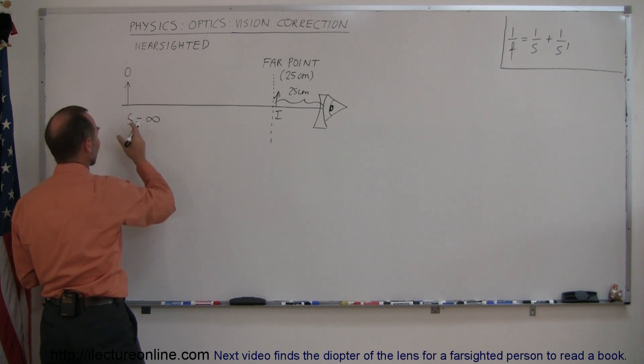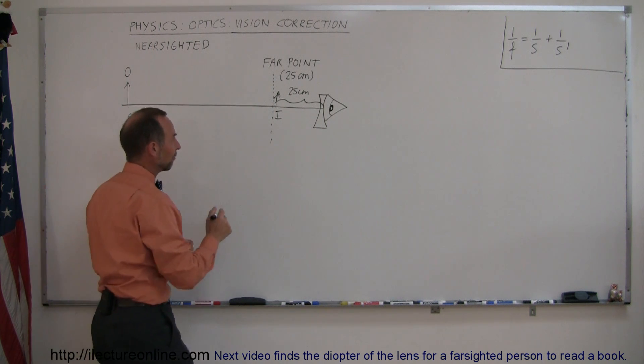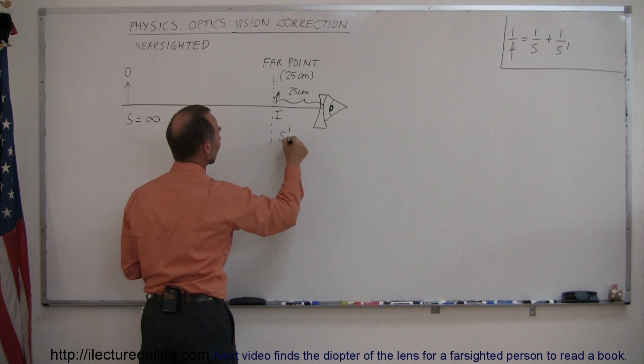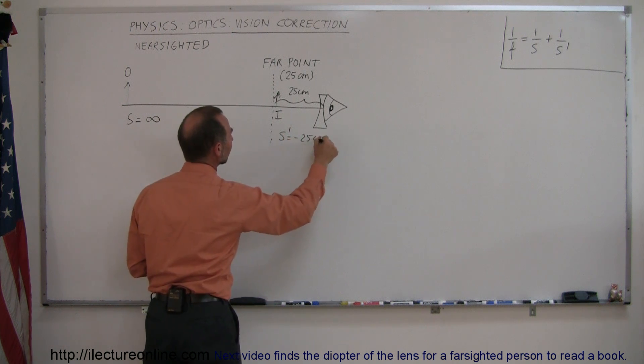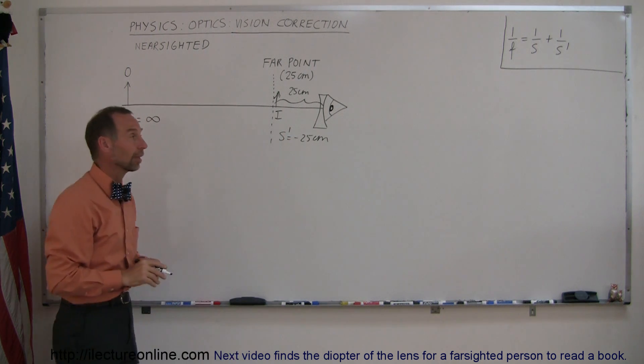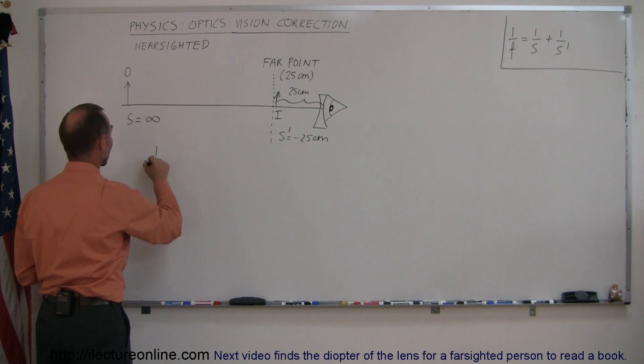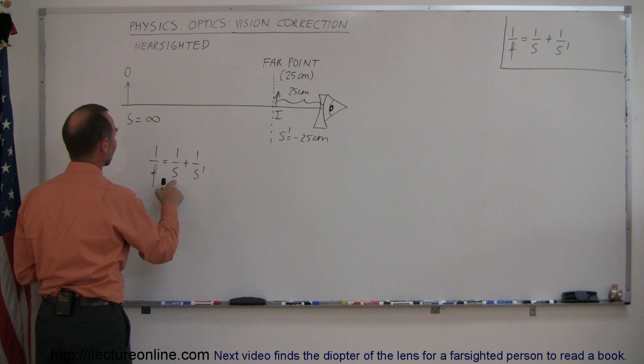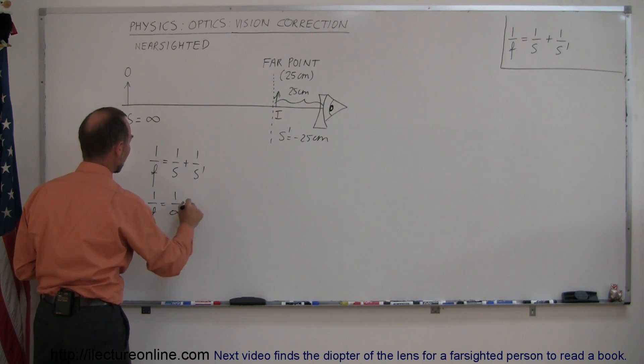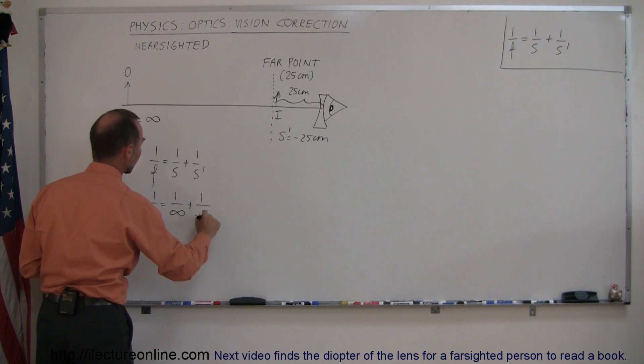So if the object is far away, for example, object distance is at infinity, that means that S prime has to be minus 25 centimeters, minus again because it's in front of the lens. Using our lens equation, we have 1 over F equals 1 over S plus 1 over S prime. S is infinity, so 1 over F is equal to 1 over infinity plus 1 over minus 25.